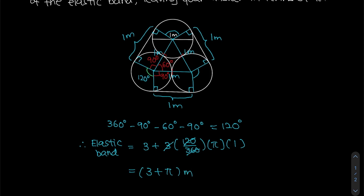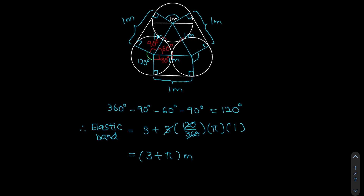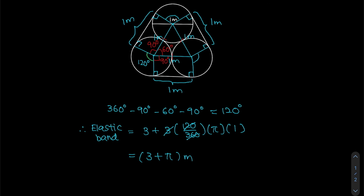To recap: we draw line segments to find the straight parts of the elastic band — one meter plus one meter plus one meter. For the curved part, we identify the equilateral triangle and use the two right angles to find the 120-degree arc angle. Multiplying by three gives one full circle, so the elastic band length is three plus pi times the diameter times 120/360 times three, which gives three plus pi meters.